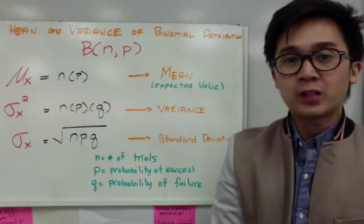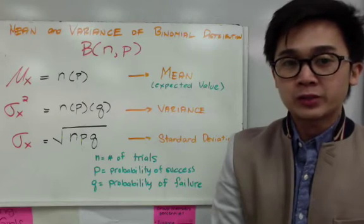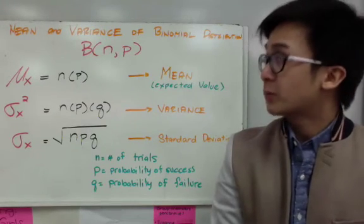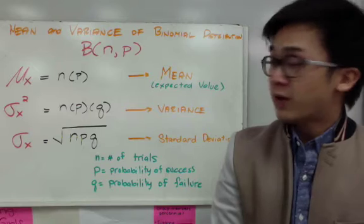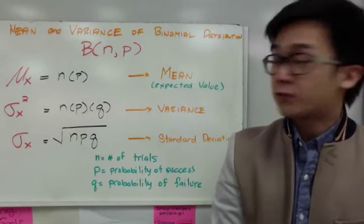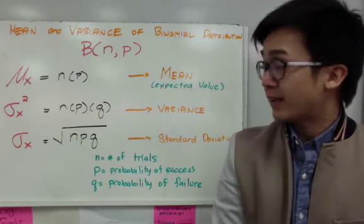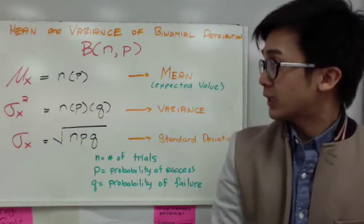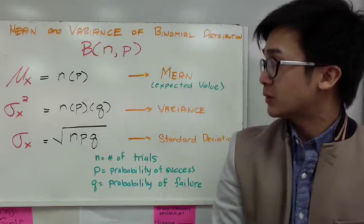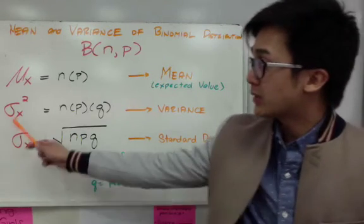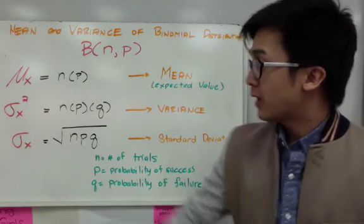In finding the mean and the variance of a binomial distribution, we follow some set of formulas. To find the mean of a binomial distribution, the formula is simply n times p. And for the variance, it's n times p times q, denoted by sigma squared.